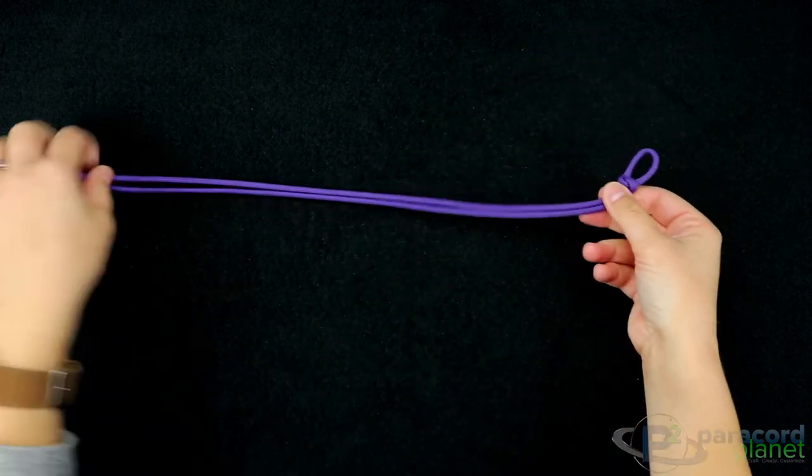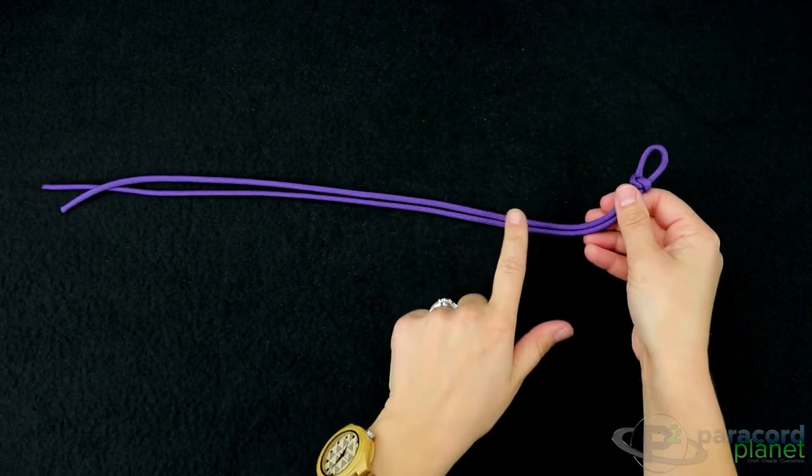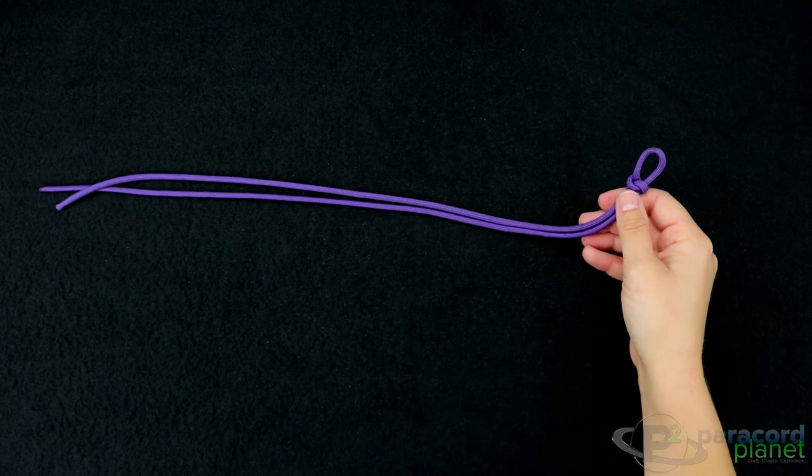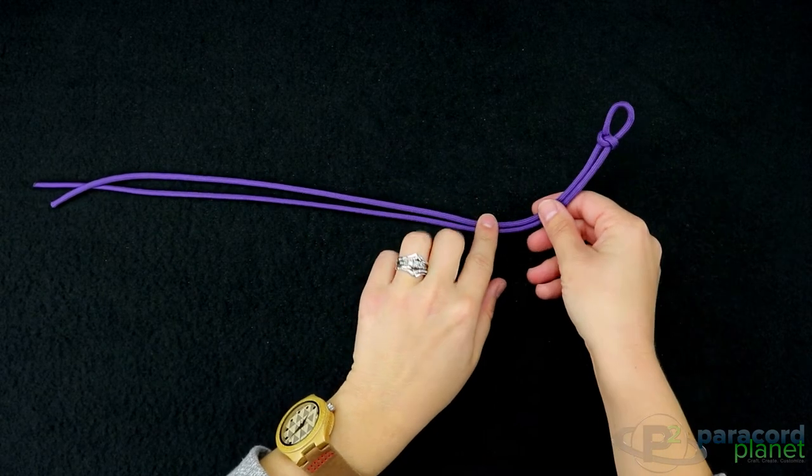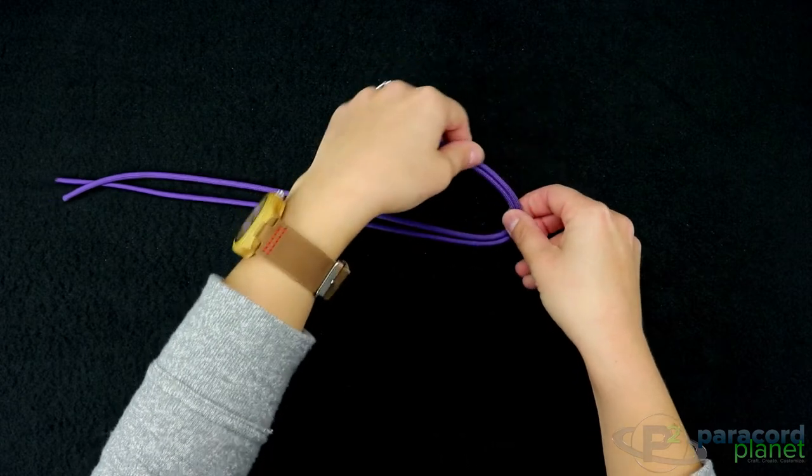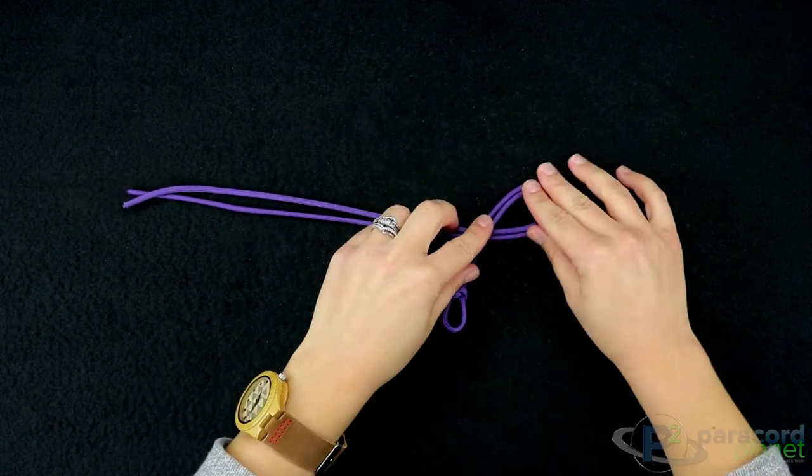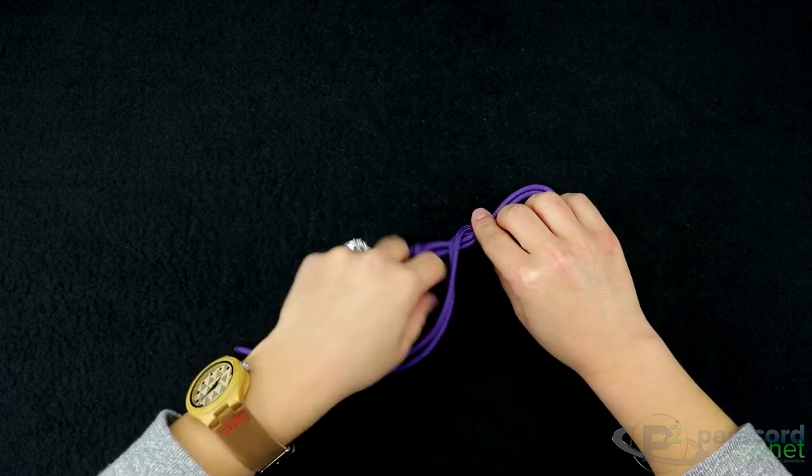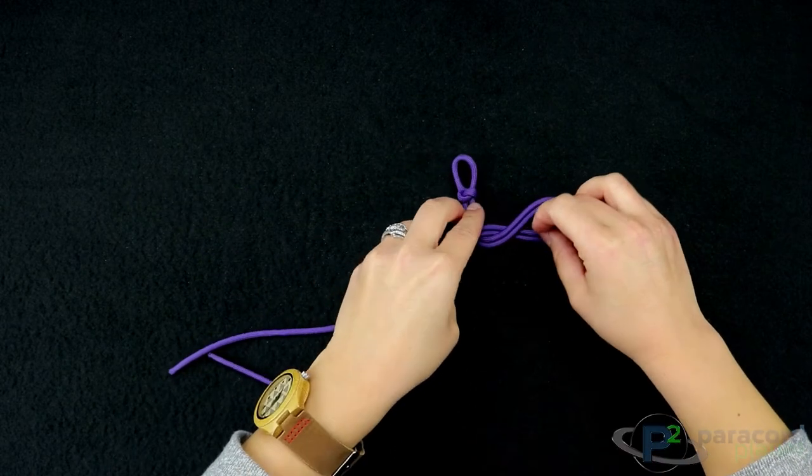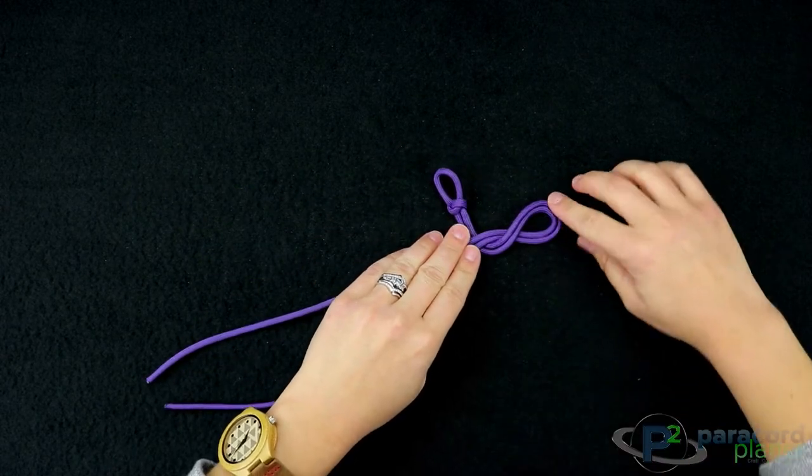So then what you'll do is just go a few inches down and don't worry too much about this part because you can adjust it in a little bit. So just go a few inches down, flip this over, go over the top, under. So this is what you should have here.